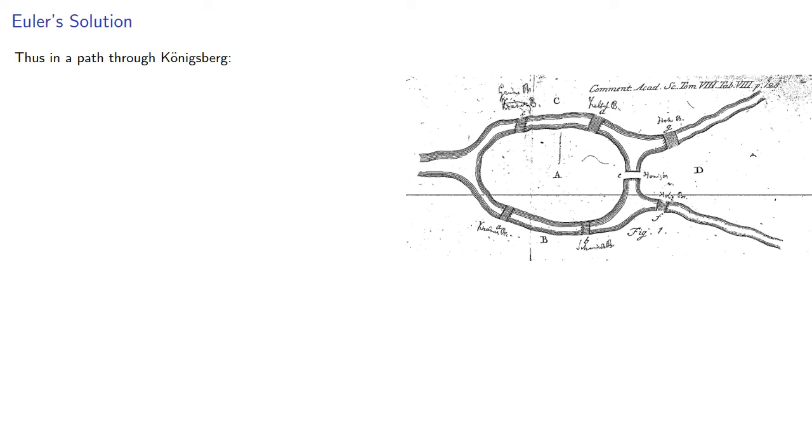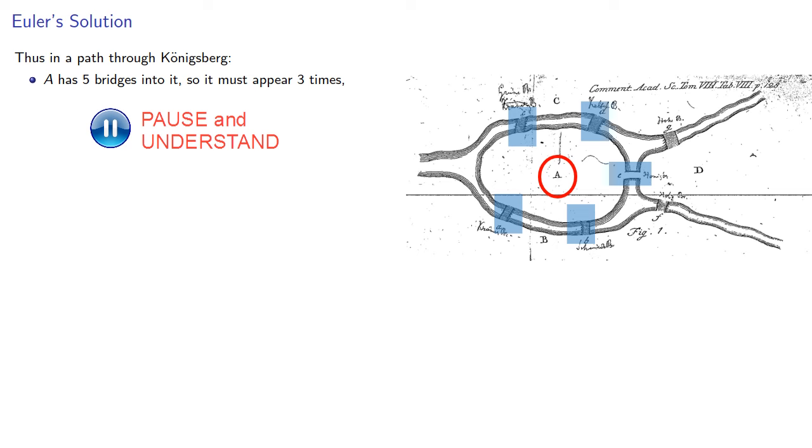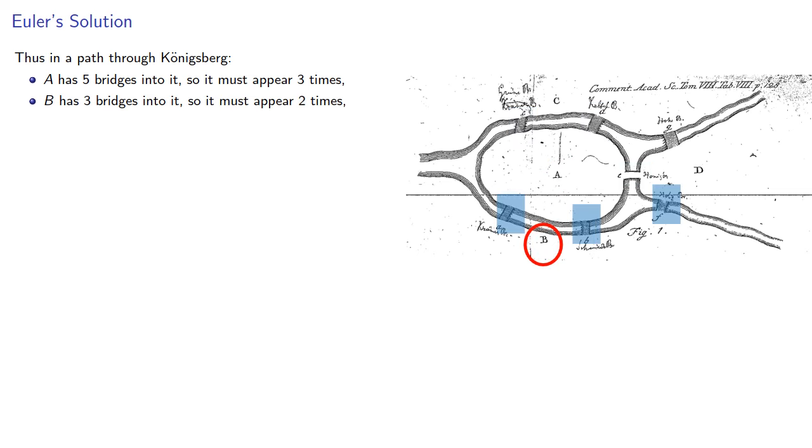Thus, in a path through Königsberg, A has five bridges into it, so it must appear three times. B has three bridges into it, so it must appear twice. C also has three bridges, so it must appear two times, and likewise D.